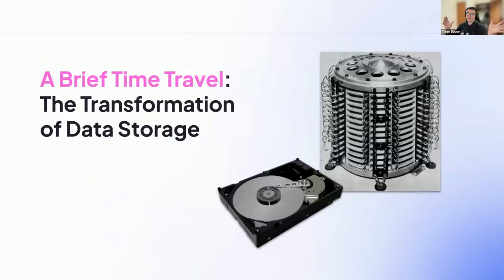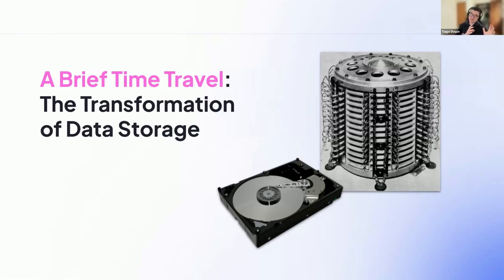A brief time travel — let's talk about the transformation of data storage and databases, how they started. This big thing here is a magnetic drum database, one of the first ways to store data. It was a gigantic drum that could encode information magnetically, just like hard disks do, but much bigger and not universal. You didn't have all the standards we have for hard disks today. Then there were also punch cards, where you would punch numbers and store data in paper. There are tapes, like VHS tapes, that can store data.